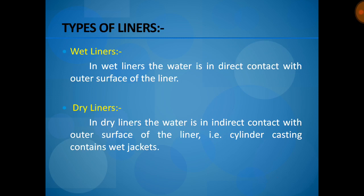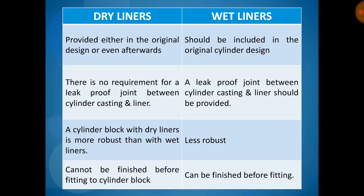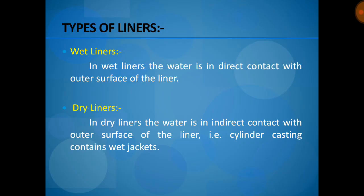Two types of liners are present: wet liners and dry liners. In wet liners, the water is in direct contact with the outer surface of the liner. In dry liners, the water is in indirect contact with the outer surface of the liner — that is, the cylinder casting contains water jackets.